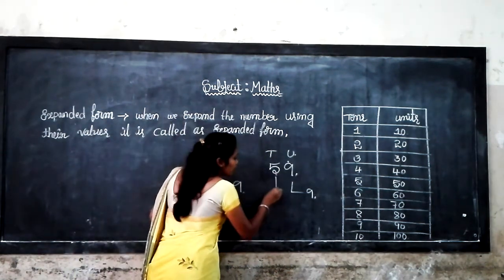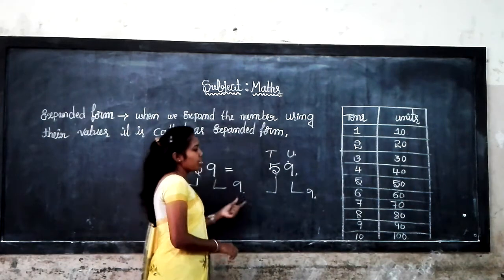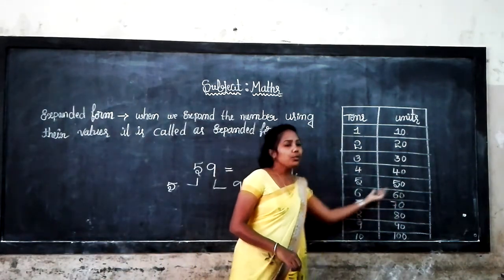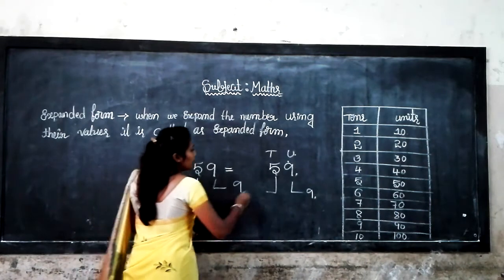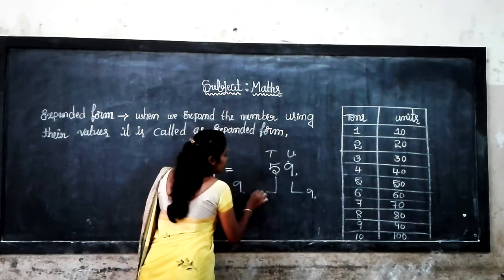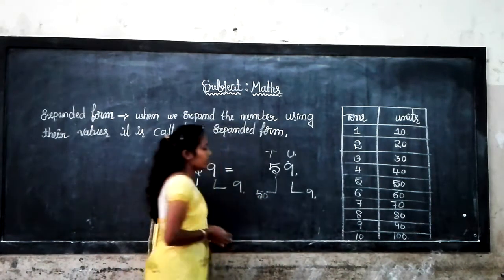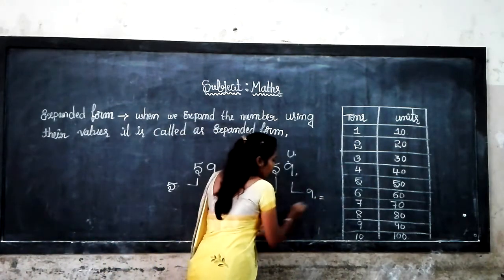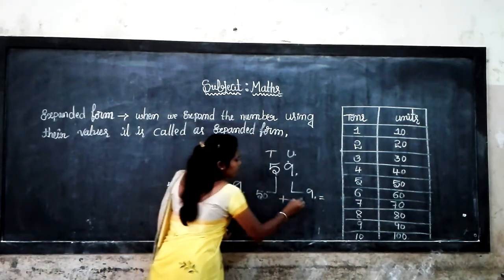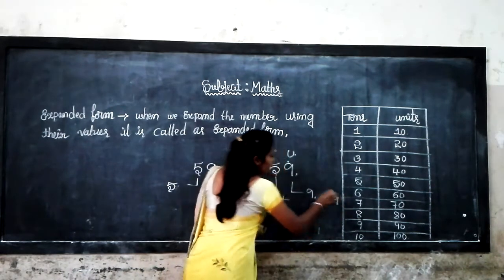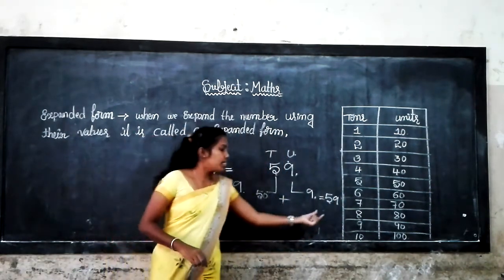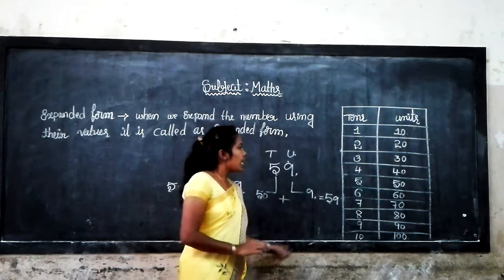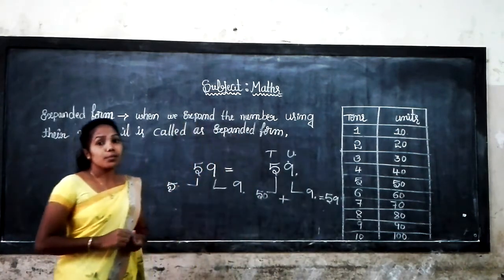What is the place value of 5? The place value of 5 is 5 times 10, which is 50. Then 50 plus 9 is equal to 59. Yes, I hope you understand the previous class.